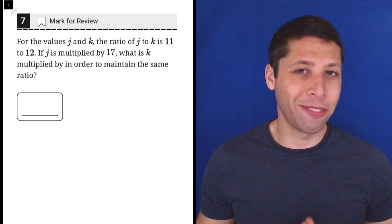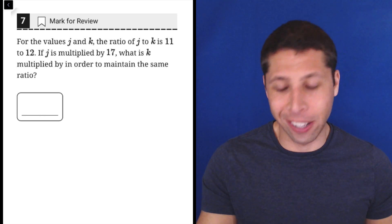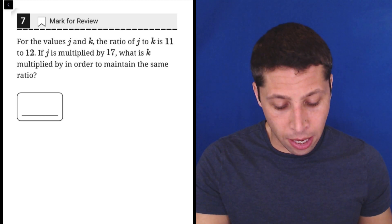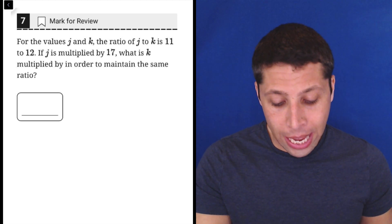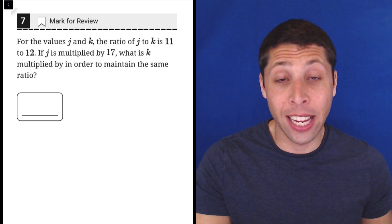All right, some of you are going to get this question just by reading it and understanding what a ratio is. So let's take a look, and I'll do that, and then we'll explain it in more detail. For the values of J and K, the ratio of J to K is 11 to 12. If J is multiplied by 17, what is K multiplied by in order to maintain the same ratio?